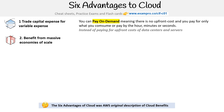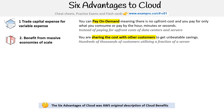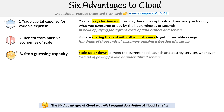The next is benefit from massive economies of scale. You are sharing the cost with other customers to get unbeatable savings — hundreds of thousands of customers utilizing a fraction of the server. Then, stop guessing capacity: scale up or down to meet the current needs, and launch and destroy services whenever.